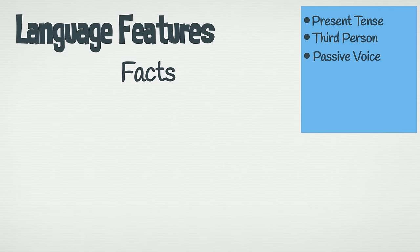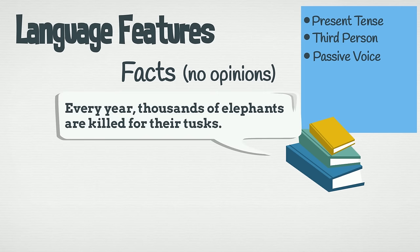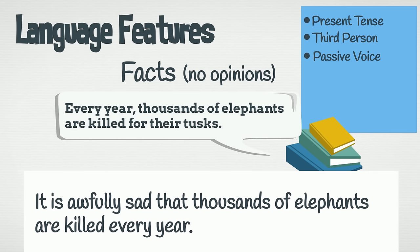Include only facts. Information reports must present facts, not the author's opinions. Let's imagine we're writing a report on elephants, and we find an information source that tells us every year thousands of elephants are killed for their tusks. Can you see a problem if we were to write this sentence in our report? It is awfully sad that thousands of elephants are killed every year. Here is the fact. This is opinion. Opinions don't belong in information reports.